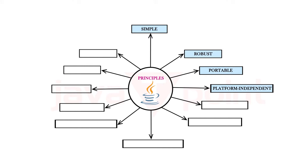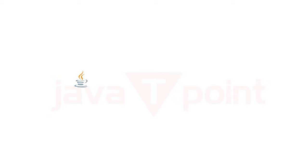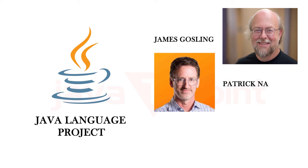multi-threaded, architecture-neutral, object-oriented, interpreted, and dynamic. This Java language project was initiated by James Gosling, Patrick Naughton, and Mike Sheridan in June 1991.